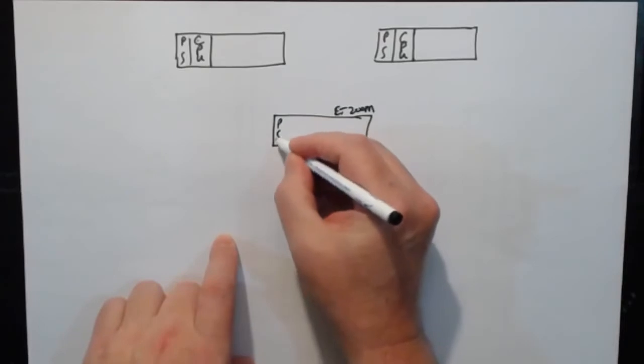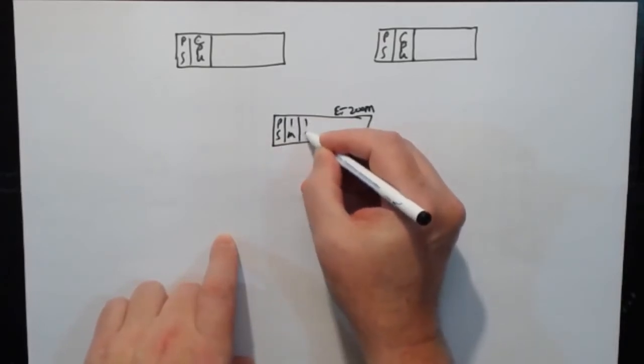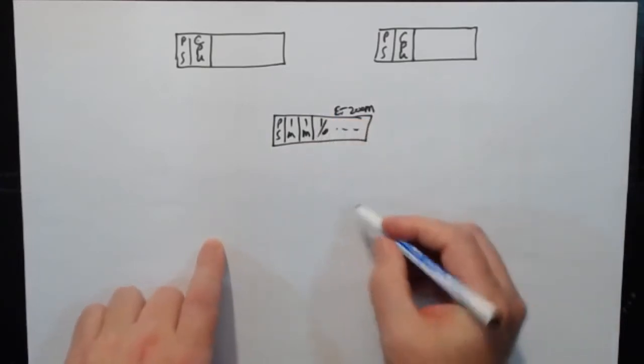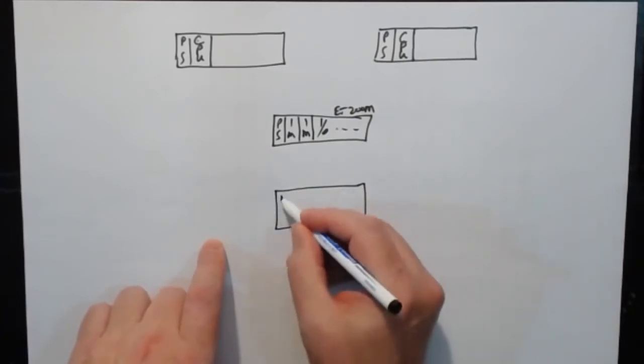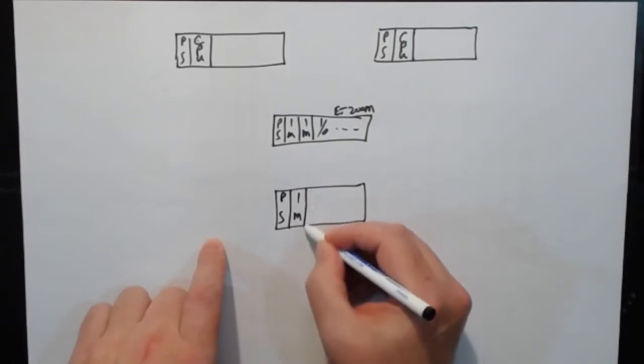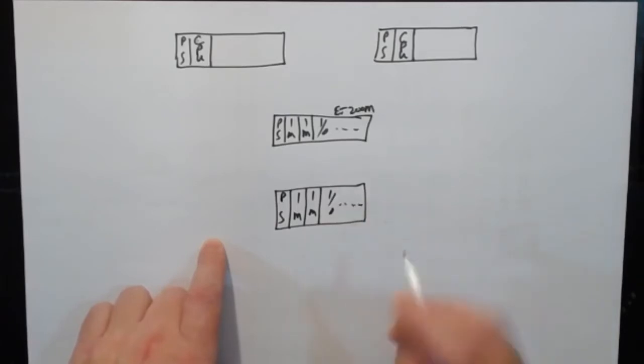They've got a power supply, an interface module and a second interface module and then I.O. And there might be another one. Again with the power supply, interface module, another interface module, I.O. and so on.